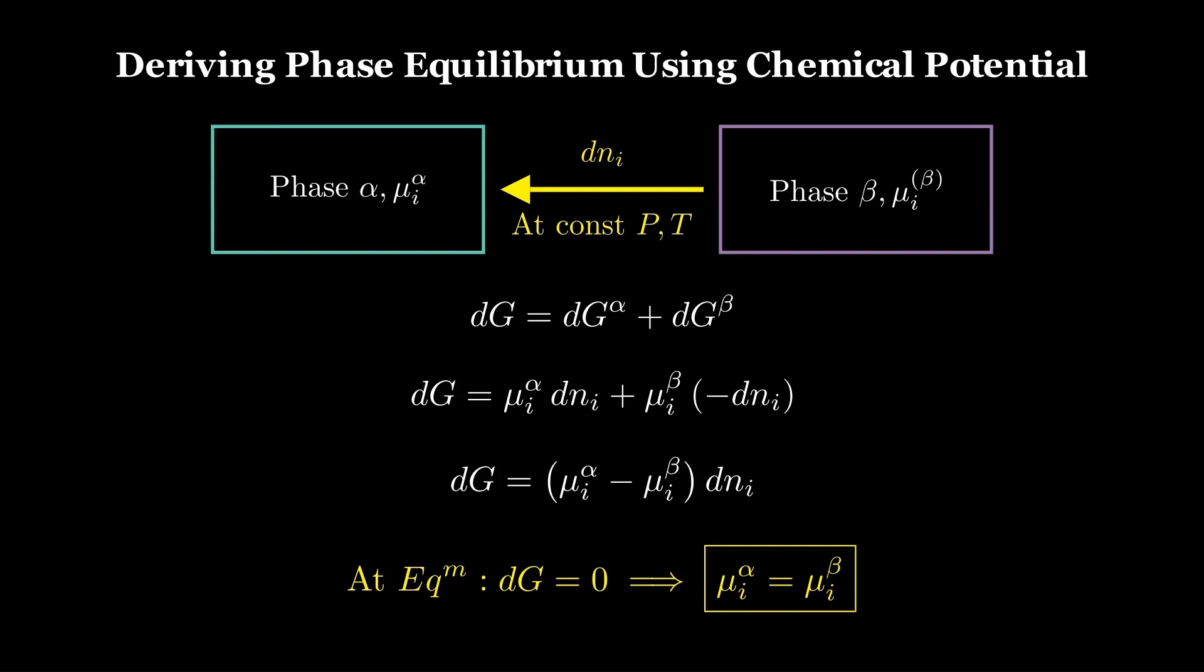Intuitively, if μ_alpha is less than μ_beta, matter would spontaneously flow from beta to alpha to lower G, until the potentials equalize. Thus we derived the condition for chemical equilibrium from the fundamental thermodynamic equations.